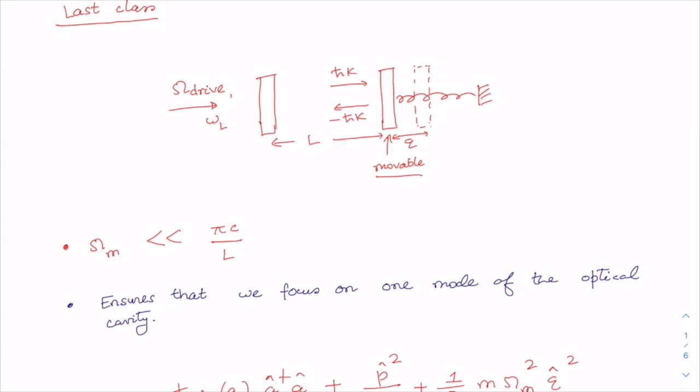Welcome to Lecture 31 of the course, which is Lecture 10 of Module 3. In this lecture, we are going to investigate the linear response of the cavity optomechanical system around the steady state, and then we will study the quantum limit for ground state cooling of the mechanical oscillator.